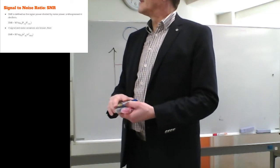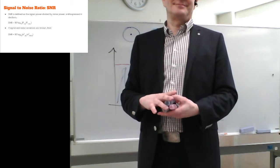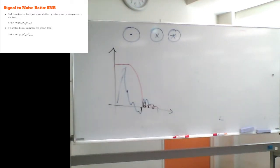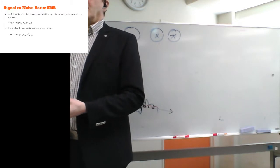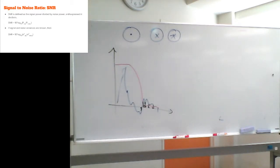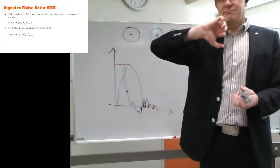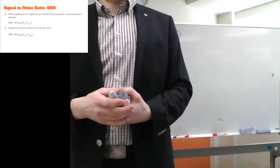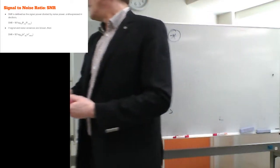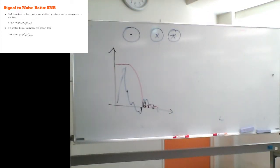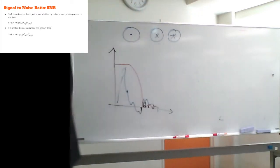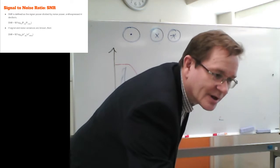Signal-to-noise ratio: it's the signal power divided by noise power, then ten times the base-10 logarithm. To calculate it for any signal, variance is directly proportional to power — variance is practically the average power of the signal. That's how you calculate SNR.